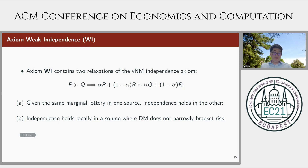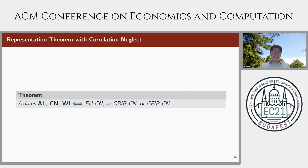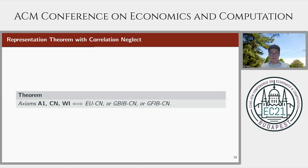So now we have our main result. A binary relation satisfies axioms A1, correlation neglect, and weak independence if and only if it admits one of the following three representations: expected utility with correlation neglect (broad bracketing), generalized backward induction bracketing with correlation neglect, or its symmetric forward induction version. Recall that weak independence is an intuitive relaxation of the von Neumann-Morgenstern independence axiom, so narrow bracketing does not deviate from the expected utility benchmark drastically, although it does induce a violation of dominance as in the introduction.